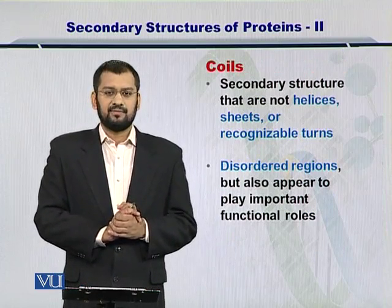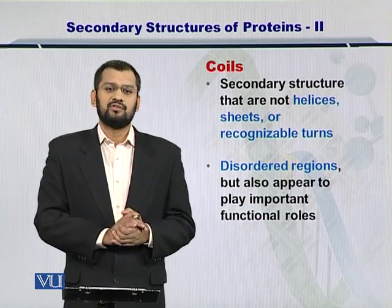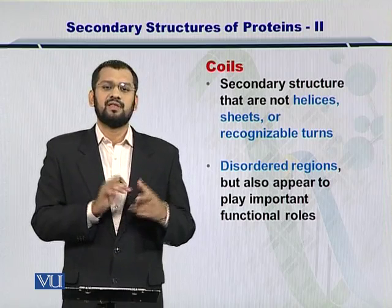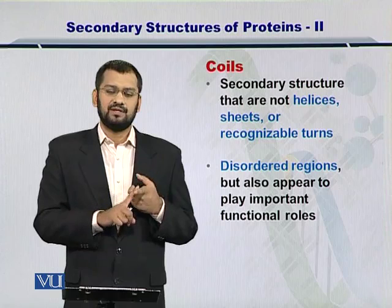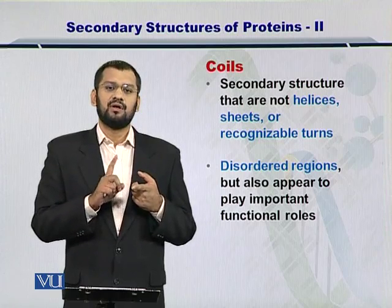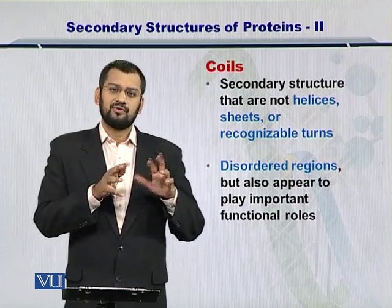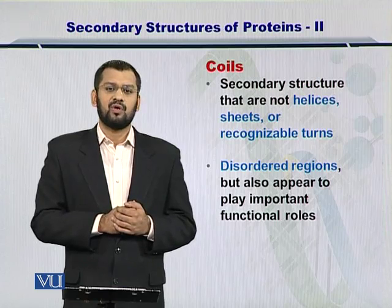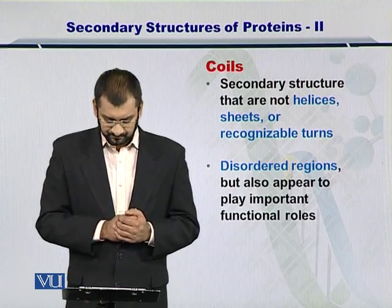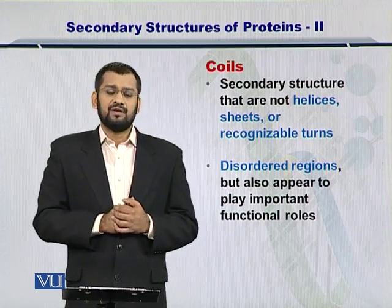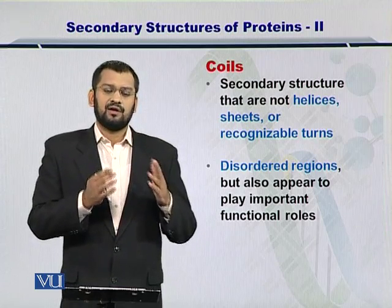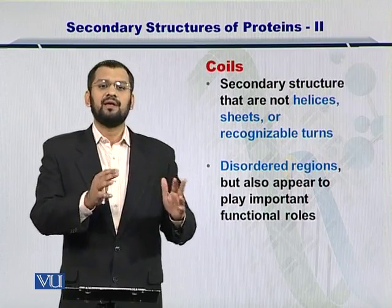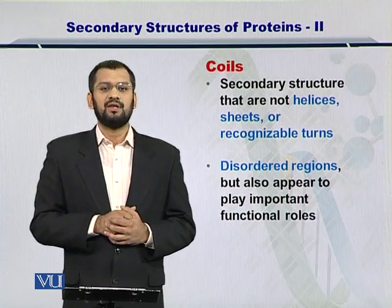Next are the coils. Coils are those secondary structures which are neither alpha helices nor beta sheets nor loops. These are some kind of disordered regions within the amino acid sequence and we call them the coils. Although they may be disordered and our understanding of them is limited, we have seen that they also play a very important role in protein-protein interaction.